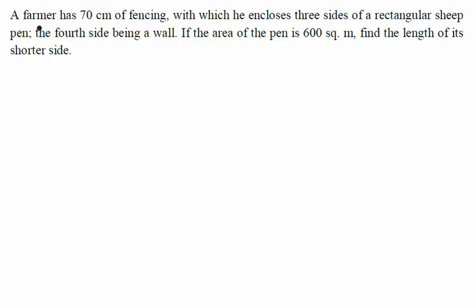So the question is: a farmer has 70 centimeters of fencing with which he encloses three sides of a rectangular sheep pen, the fourth side being a wall.